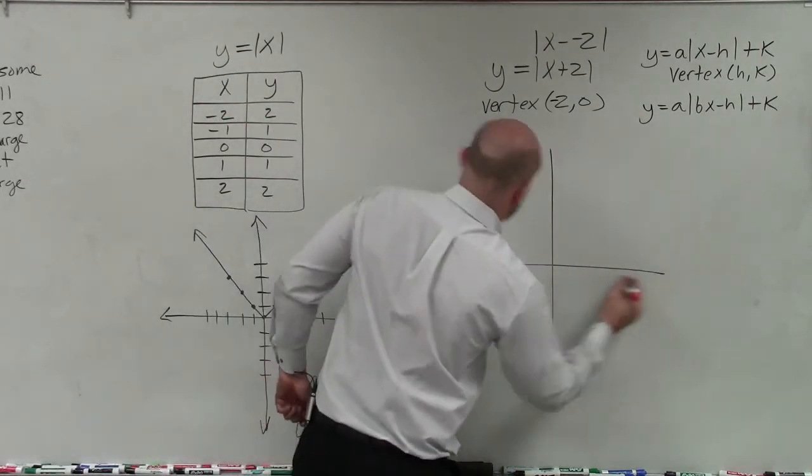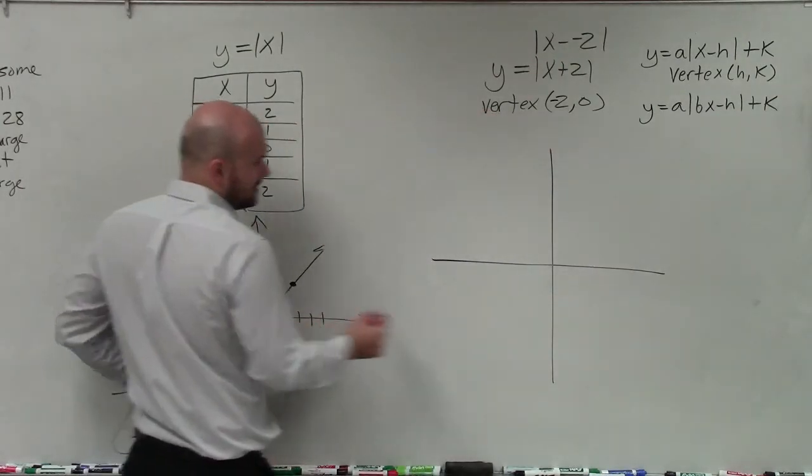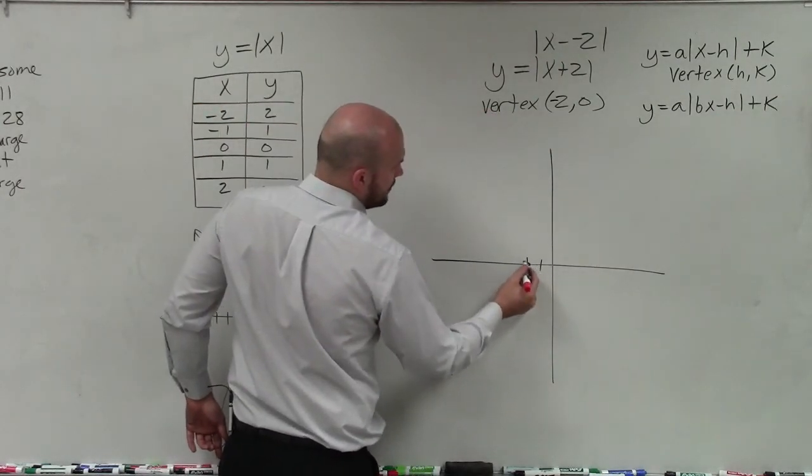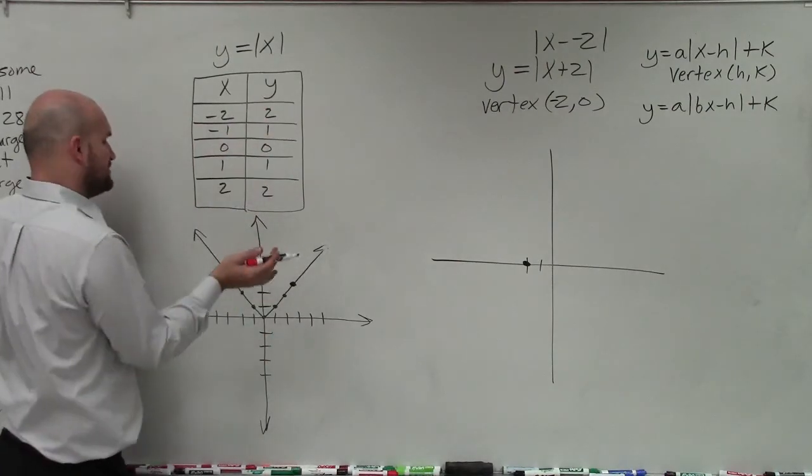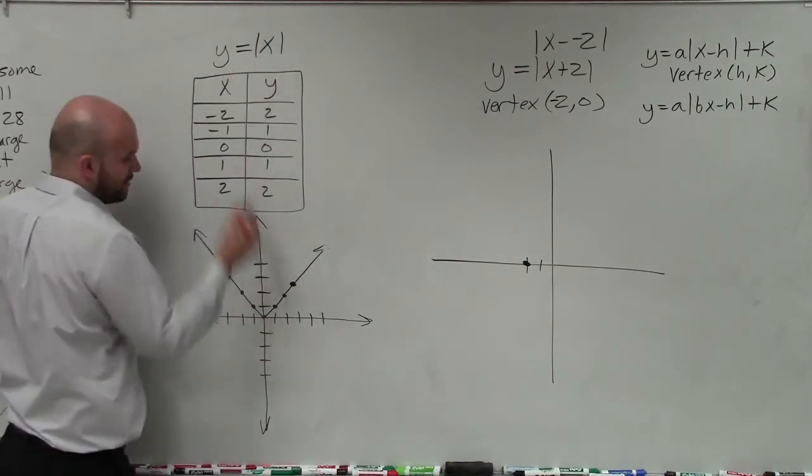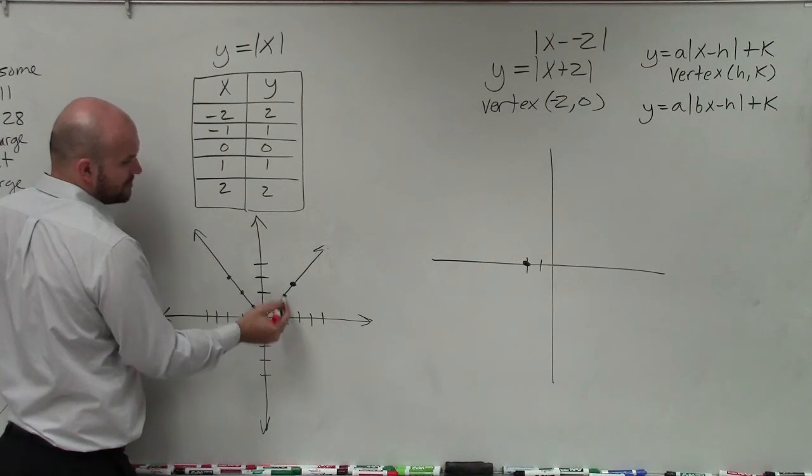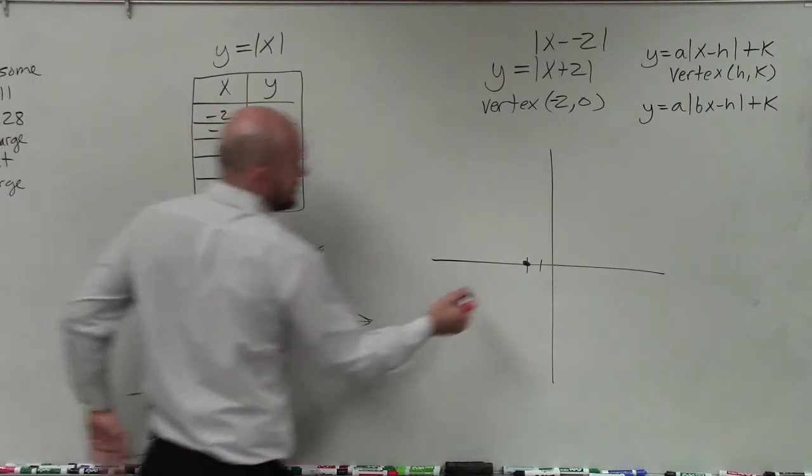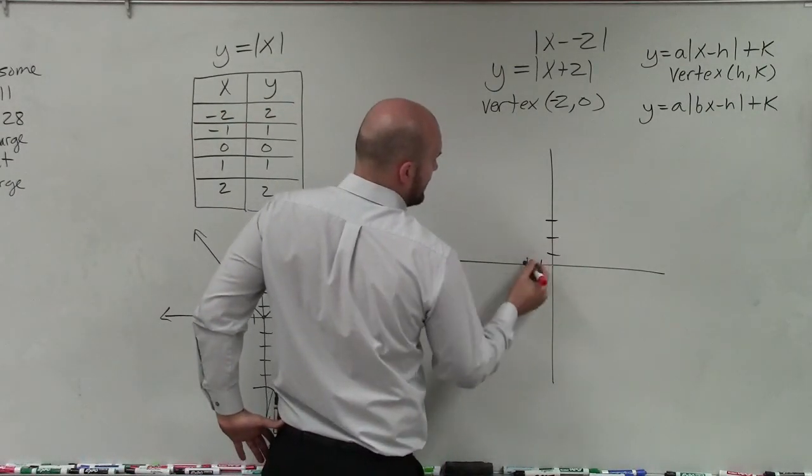So I know that the vertex is the pivot point, right? And then you could shift all these points if you wanted to, but just notice the parent graph goes over 1, up 1; over 2, up 2; over 3, up 3. So I'm just going to follow that pattern.